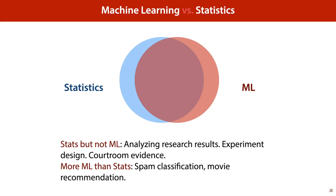Both fields deal with the business of fitting models to data, and the main difference comes from what we want from the model once it's fitted. In general, in statistics we are looking to find a model that not only fits the data well but also matches reality — in some sense the model needs to do what actually happened to produce the data and needs to help us explain that. So for instance when analyzing research results or dealing with courtroom evidence, statistics will tell us what actually happens. Whereas in machine learning, when we deal with something like spam classification or movie recommendation, we are really only interested in providing predictions that are likely to be accurate, and we don't care that much whether the machine learning model actually follows the causal relations that led to the data in the first place.